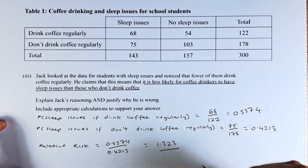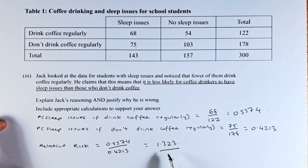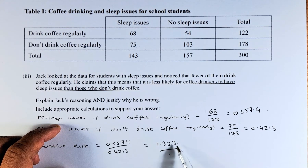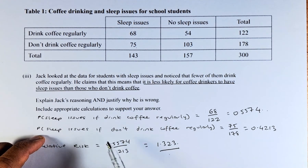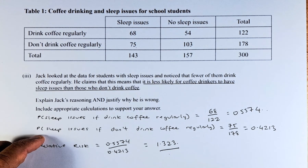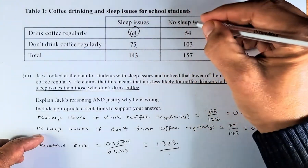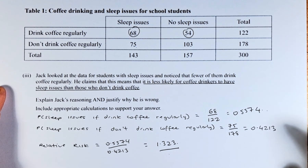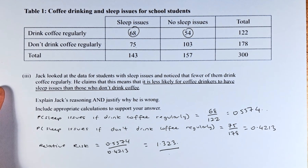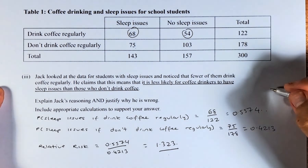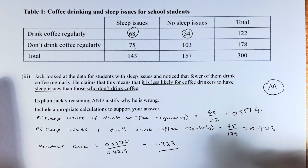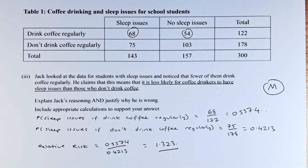So Jack is wrong because those who drink coffee regularly are 1.323 times more likely to have sleep issues than those who don't drink coffee regularly. He was looking at absolute numbers rather than conditional probability. That is how you answer this question, and that answer will give you a merit. The first and second questions are achieved, and the third is a merit. Keep watching — I'll do question 1B in the next video. Cheers everyone, have a good day.